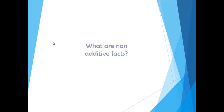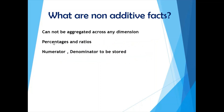The last question for today: what are non-additive facts? Non-additive facts cannot be aggregated across any dimension. Good examples are percentages and ratios — you cannot add up the percentage for 10 customers, and similarly you cannot add up ratios. The approach to resolve this is to store the numerator and denominator separately. For example, if calculating profit percentage, store your cost amount and sales amount so you can aggregate them separately and then calculate the final percentage or ratio.